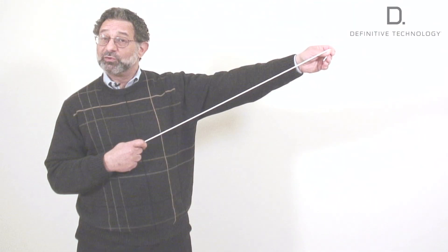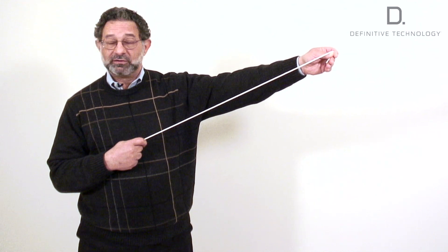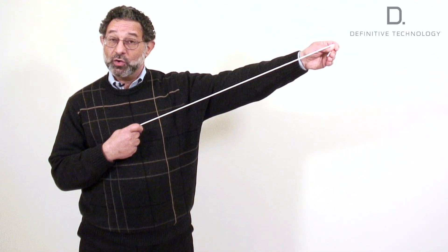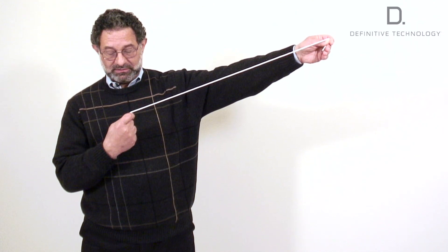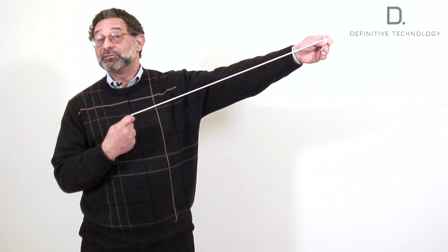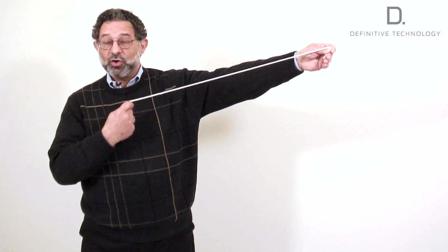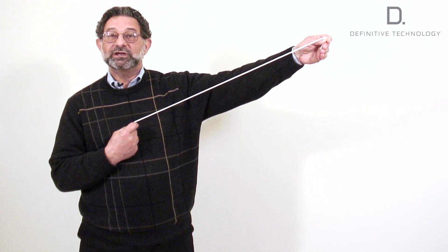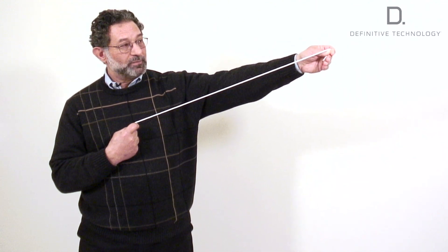I'll use this rope to illustrate cone resonance. Now, imagine that this rope is the cross section of a cone, and my right hand represents the voice coil, that's the part of the speaker that moves the cone back and forth. My left hand is the surround, or the outer terminus of the cone.